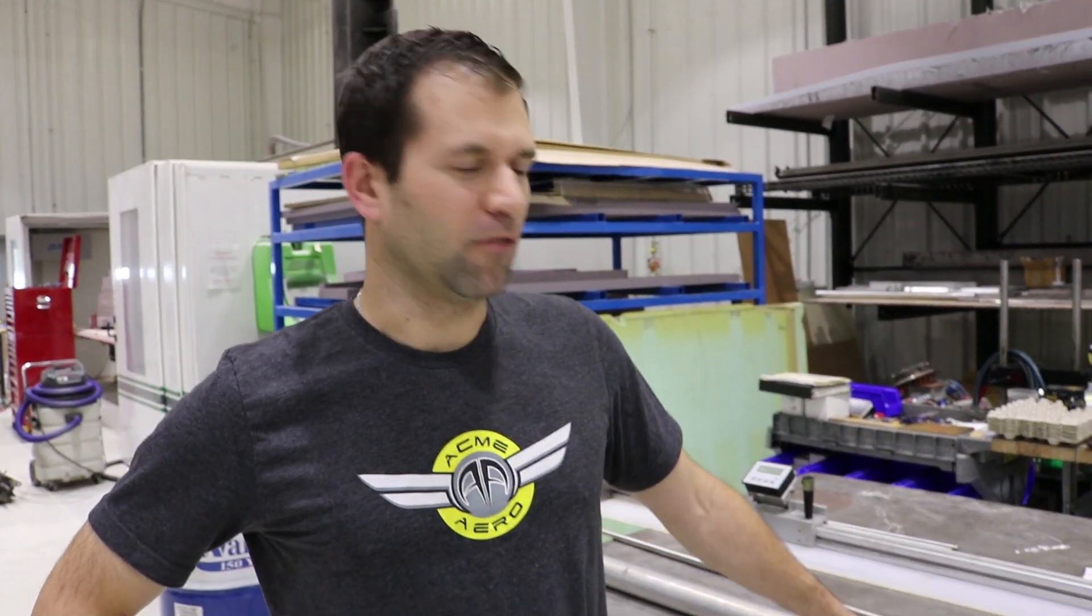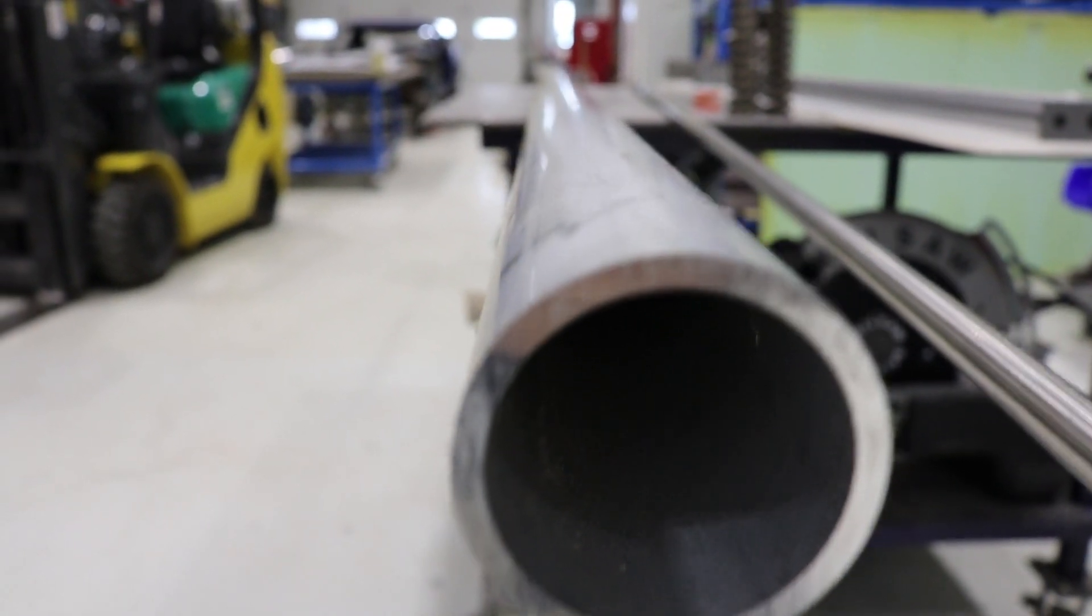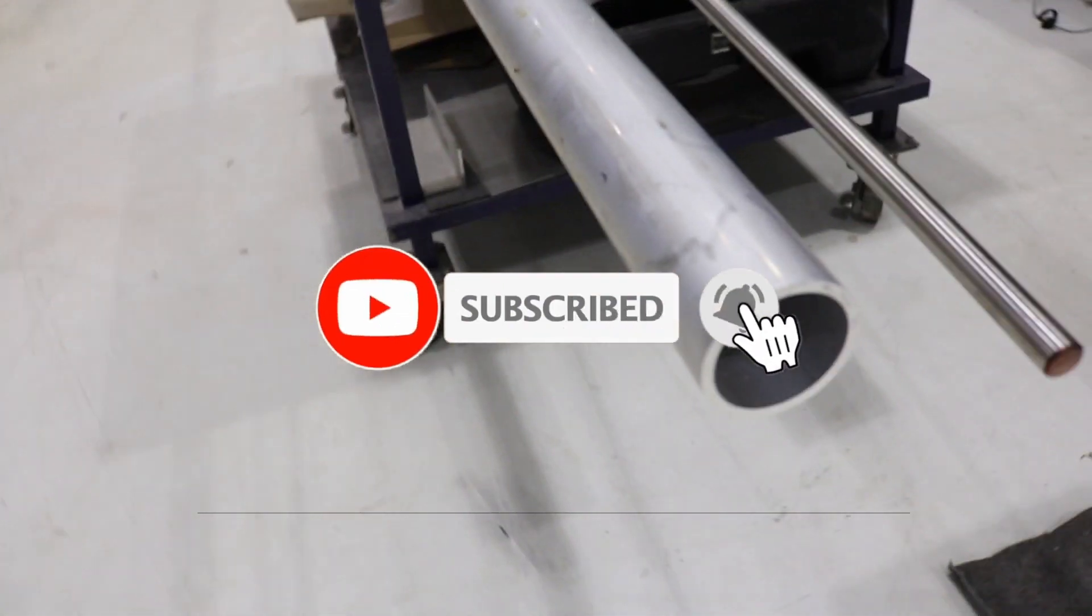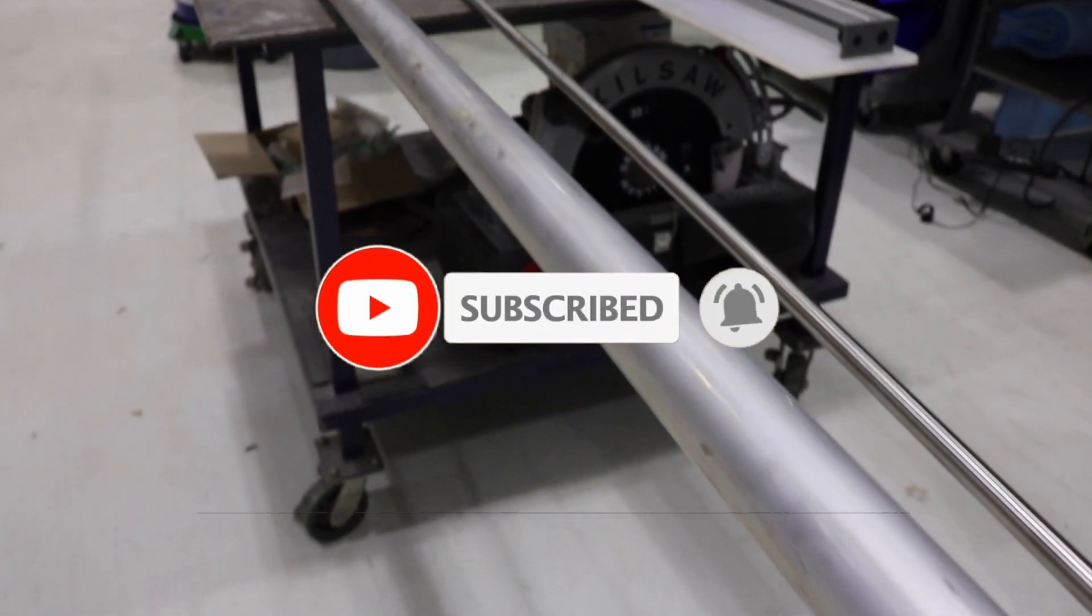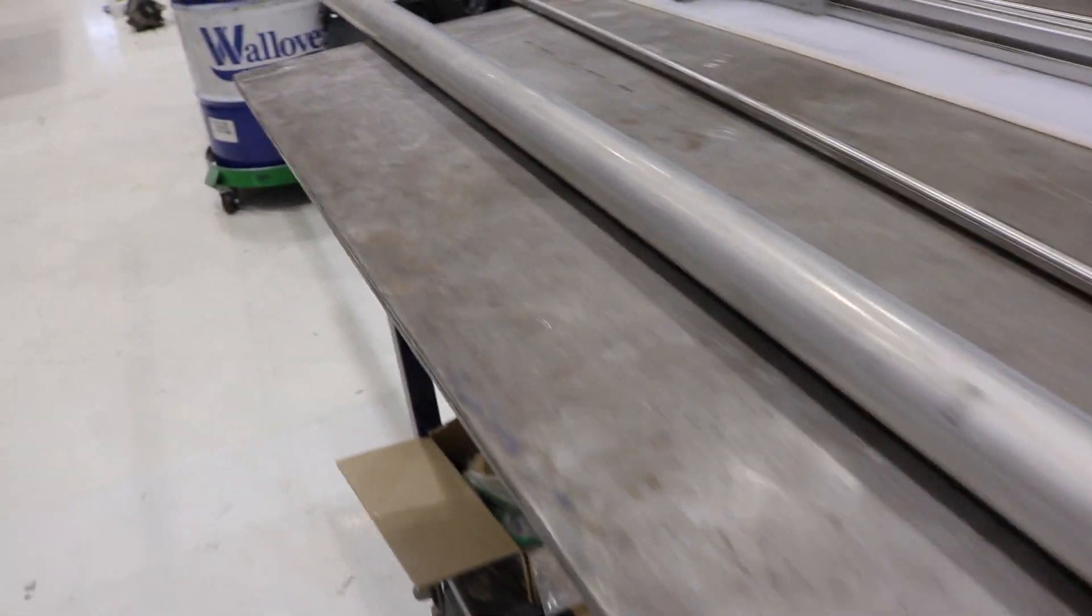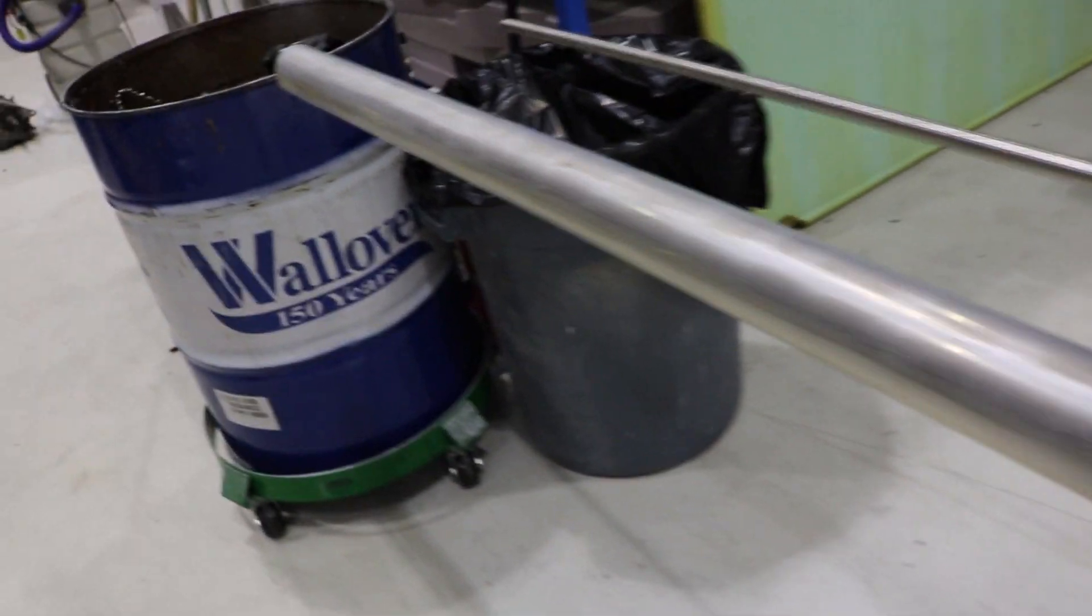Right now we've got raw body material tube that we use on our Cub shocks and our Stoll shocks. We have shaft material that we use for our Cub shocks and an assortment of springs that we use in the Stinger tailwheel as well as the Cub shocks. Starting off with the body material, it's a proprietary material, custom designed and custom drawn to our specifications.